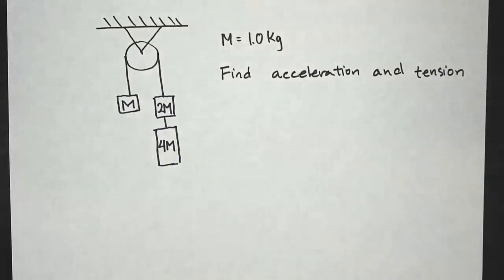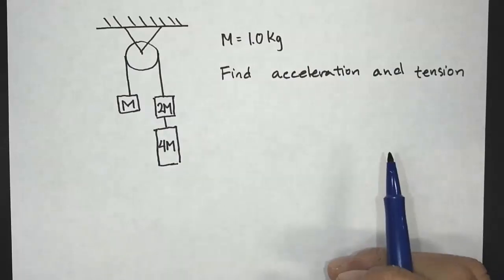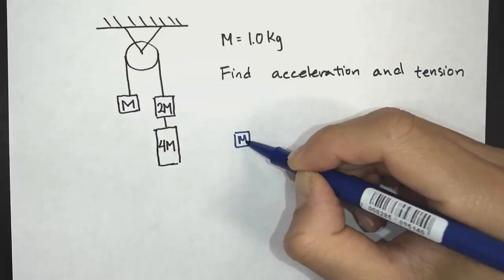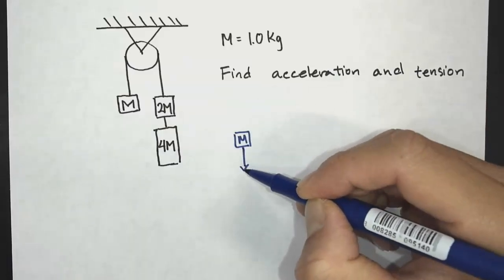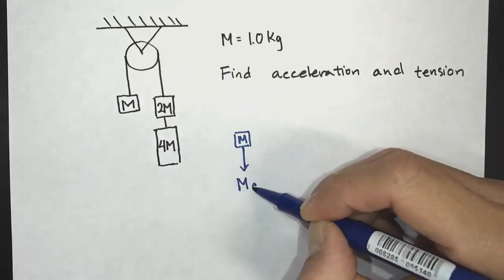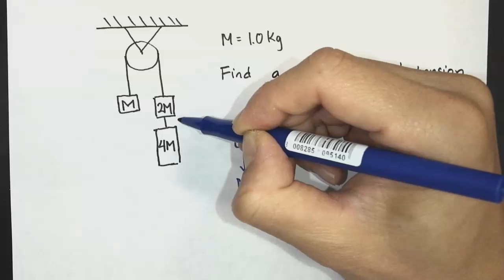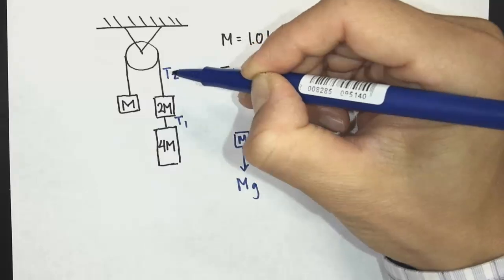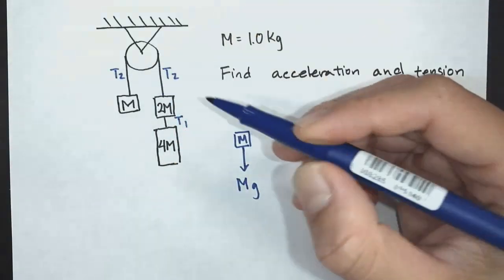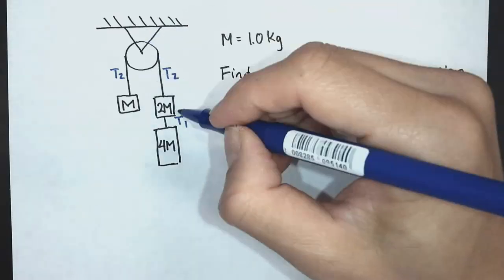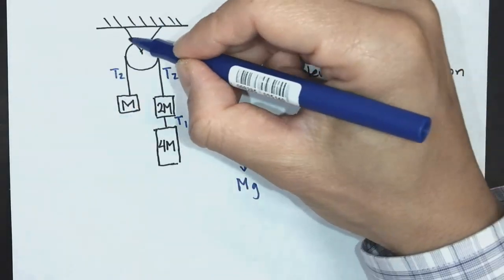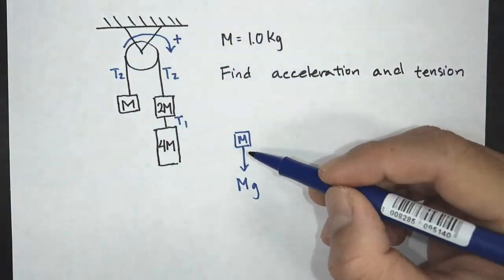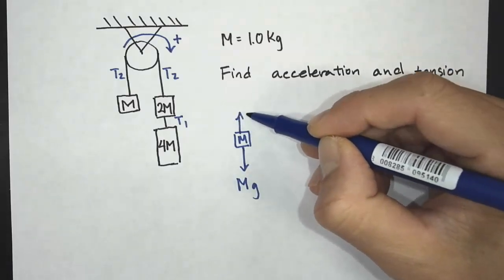We're going to start by drawing a force diagram for each of the masses. For the first mass M, we're going to have a force going down, which is the weight Mg, and then going up we label this tension T1. These are massless strings. We're also going to label this T2, and indicate the positive direction — this side looks heavier so it rotates this way, making that our positive direction. So we have Mg down and T2 up.